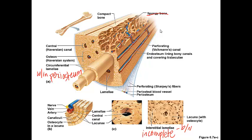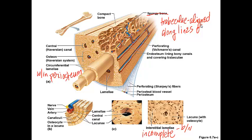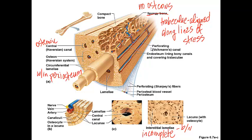We also see spongy bone, also called trabecular bone, which looks less organized. Interestingly, the trabeculae are aligned along lines of stress, acting like tiny struts carefully positioned like cables on a suspension bridge — very important since one of bone's major functions is to resist stress. Notably, osteons are not present in spongy bone; osteons are an important feature of compact bone only.